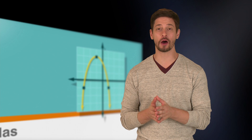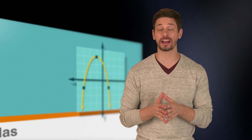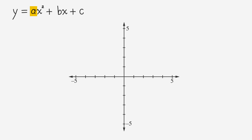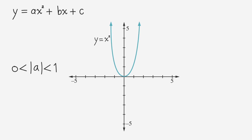Another rule to remember is how the size of the coefficient affects the width of the parabola. If the absolute value of the coefficient of x squared is between 0 and 1, like a fraction, the graph of the parabola will be wider than y equals x squared. For example, in y equals one-third x squared, because a is one-third and one-third is between 0 and 1, the graph is wider than y equals x squared.